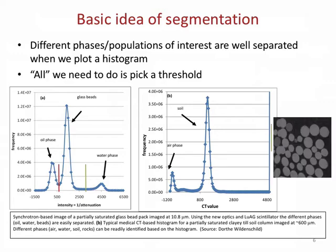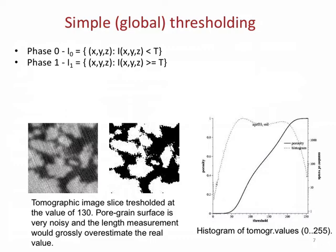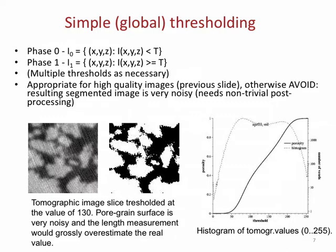Most of the time that's not the case because porous media are complex. The simple thresholding approach says: phase zero is all of the intensities at XYZ that are less than some threshold; phase one is everybody above. You can do multiple thresholds as necessary. This is appropriate for high quality images.